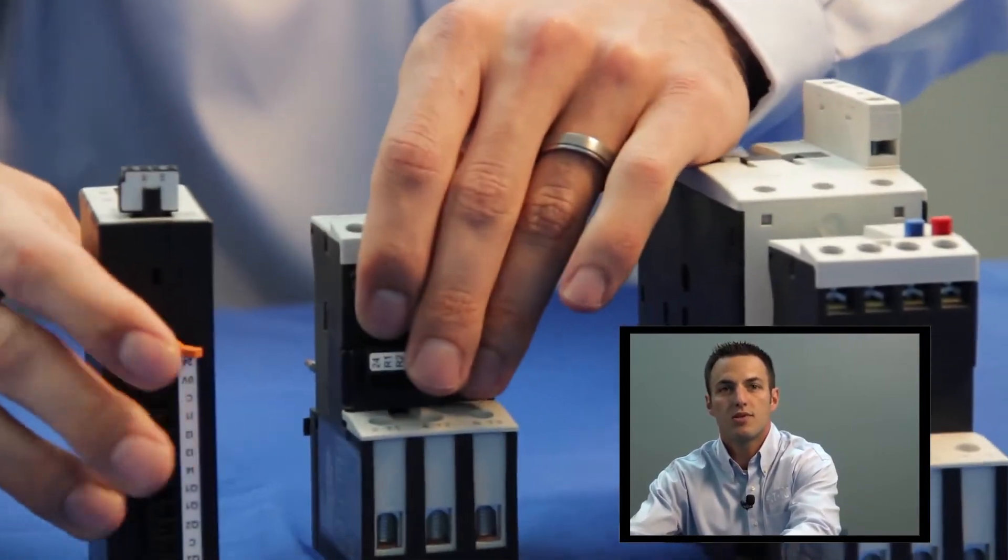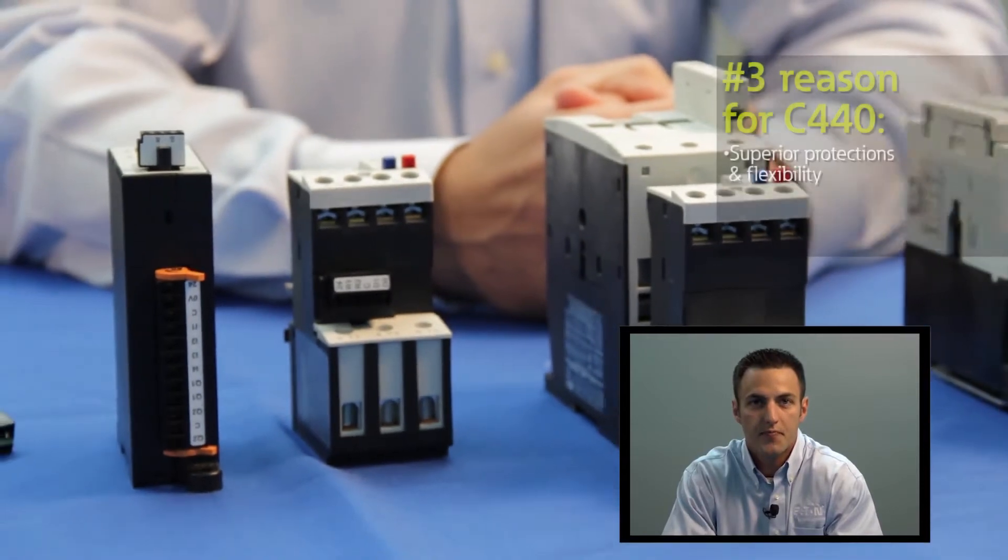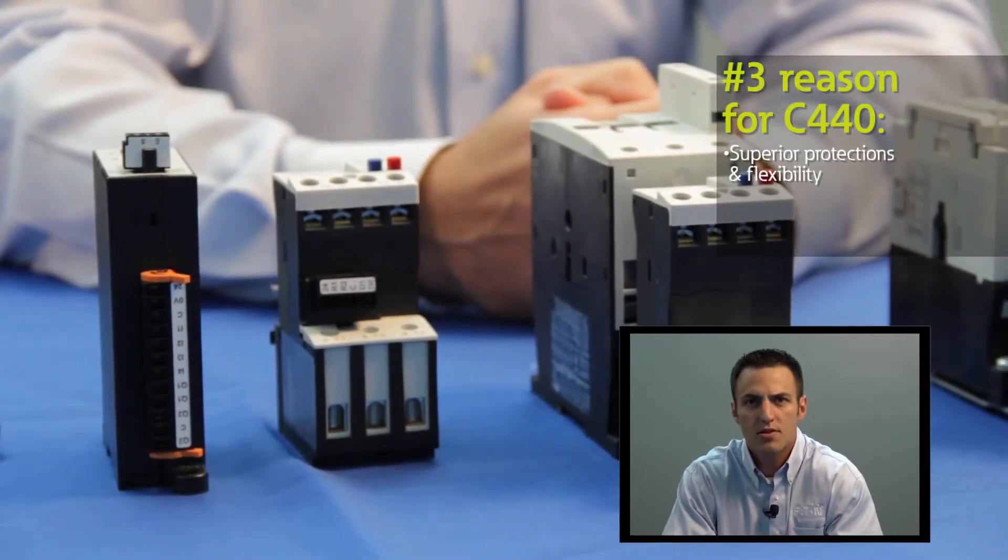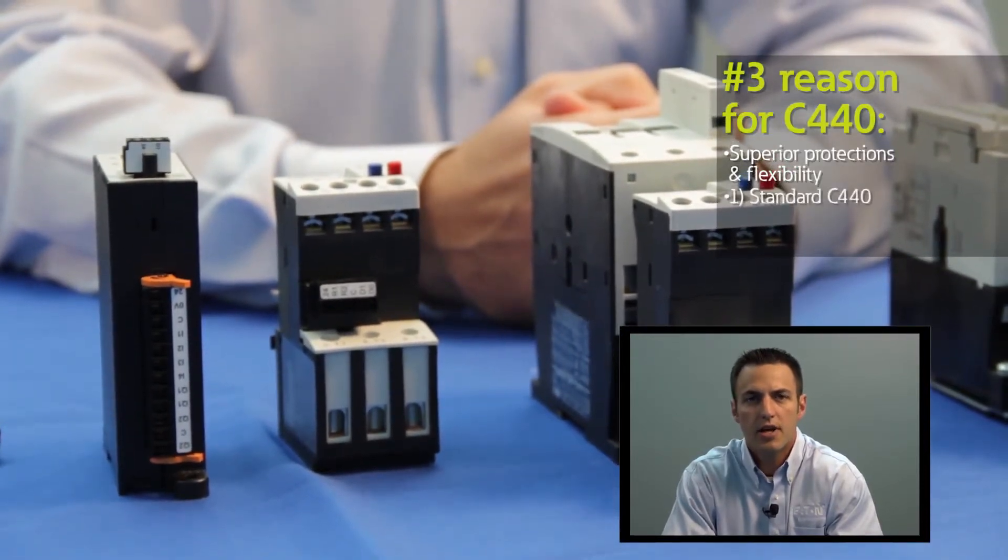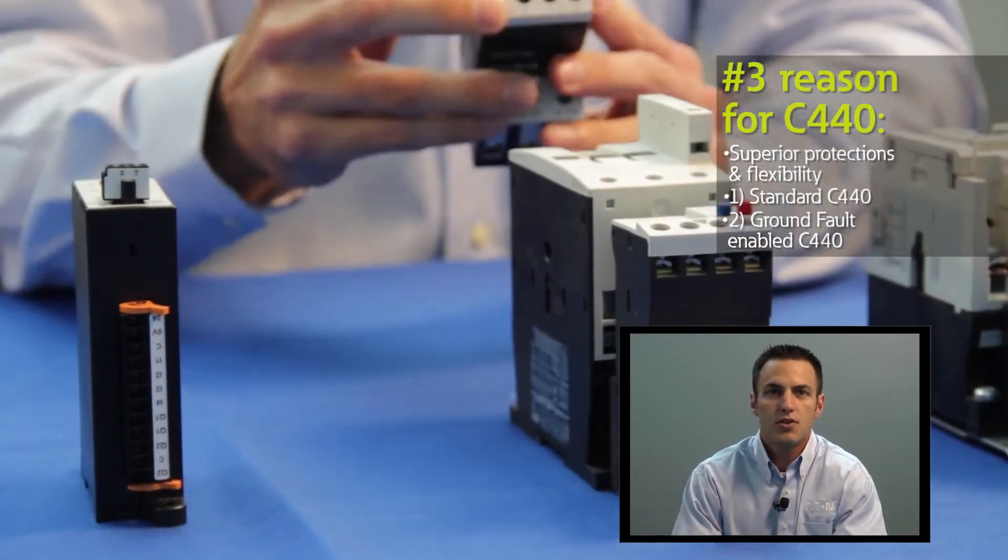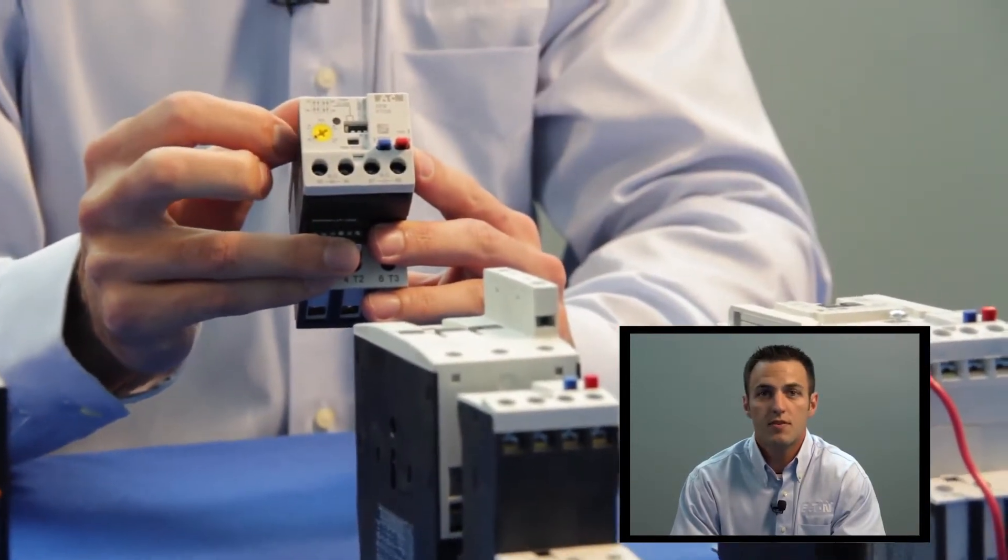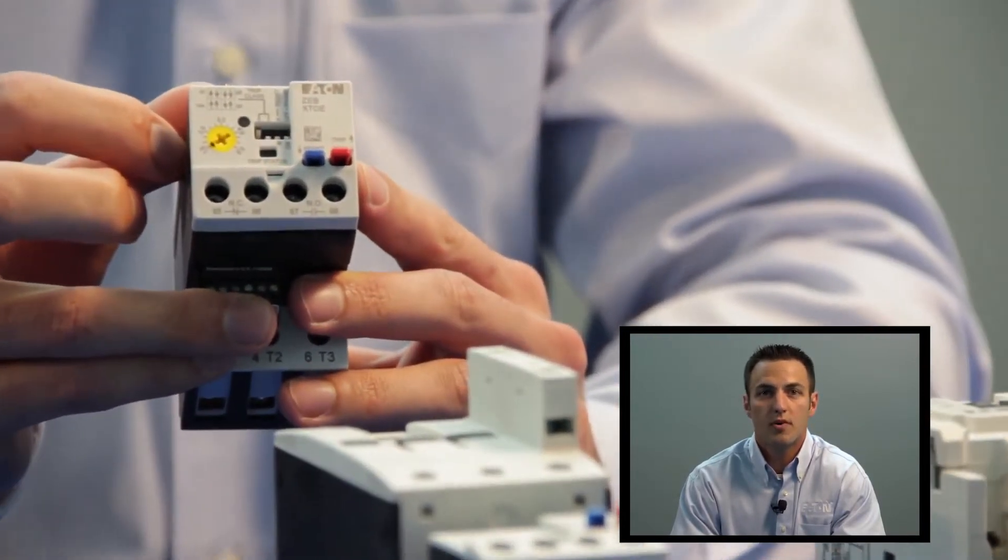The third reason the customer would use a C440 is superior motor protections and flexibility. Now the C440 comes in two versions, standard and ground fault. On the standard version, the user has four dip switches located on the front of the device.